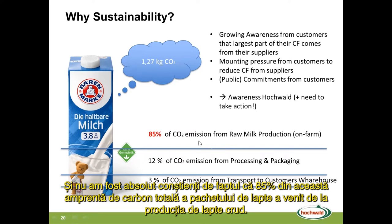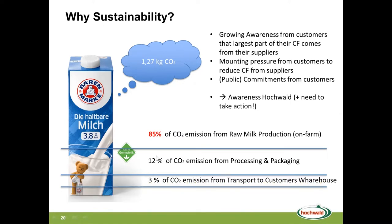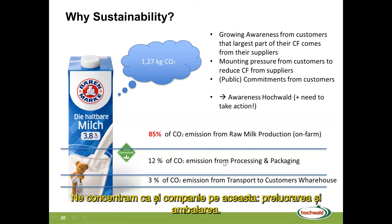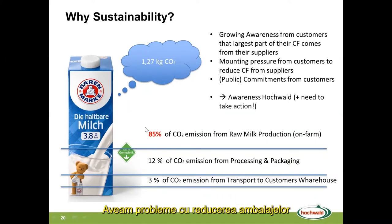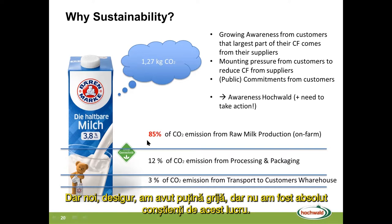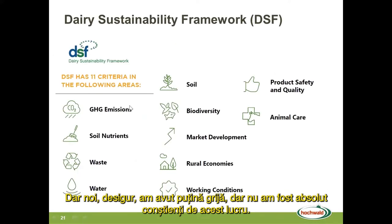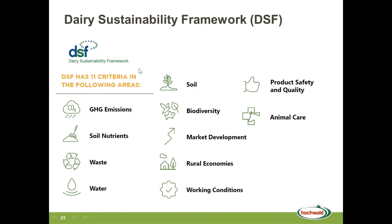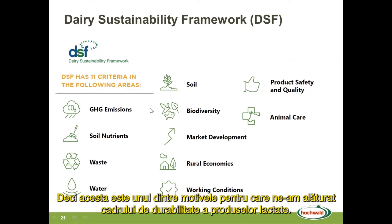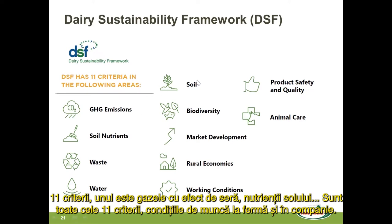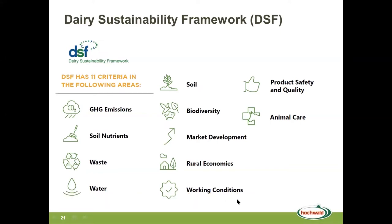We were concentrating as a company on processing and packaging — buying green energy, reducing packaging — but we were absolutely not aware of where the emissions really came from. So this is one of the reasons why we joined the dairy sustainability framework, with 11 criteria: one is greenhouse gases, soil nutrients, and all the other criteria that really matter if you want to be sustainable.